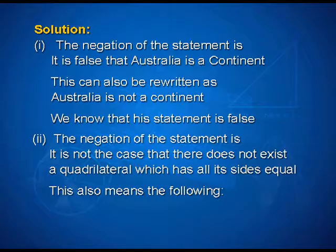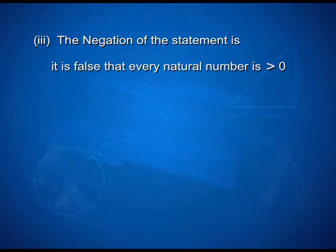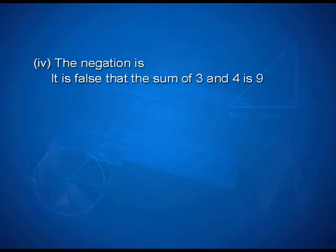Let us look into the solution. First, the negation of the statement is: it is false that Australia is a continent. Second, the negation of the statement is: it is not the case that there does not exist a quadrilateral which has all its sides equal. This also means: there exists a quadrilateral which has all its sides equal. This statement is true because we know that a square is a quadrilateral such that its four sides are equal.